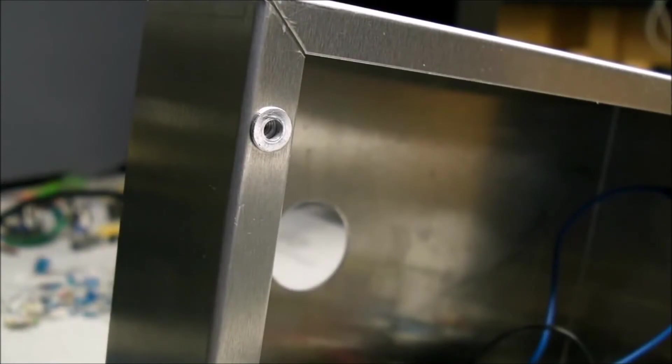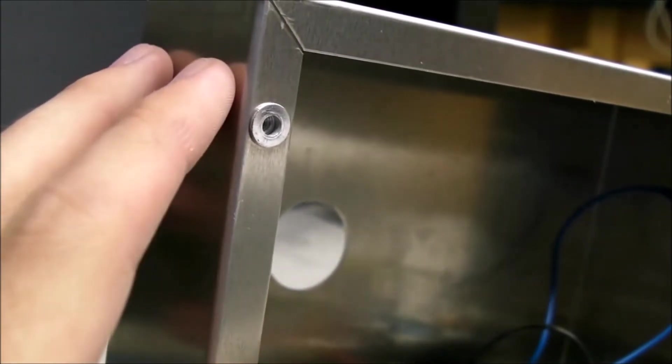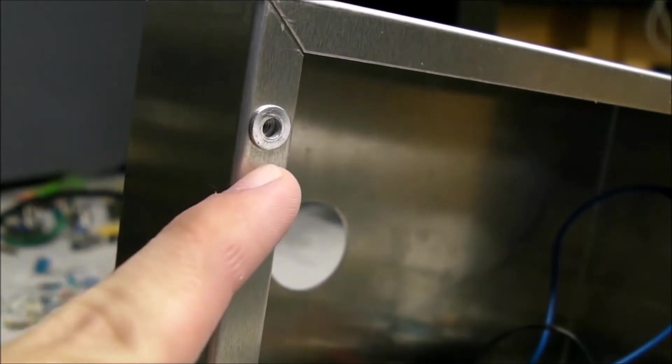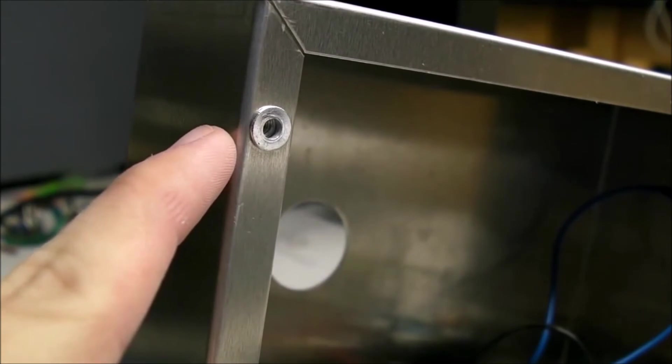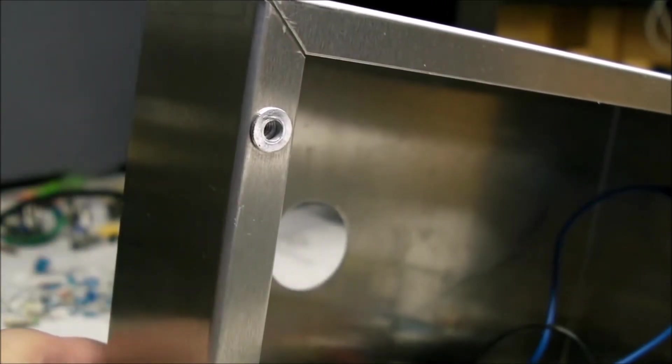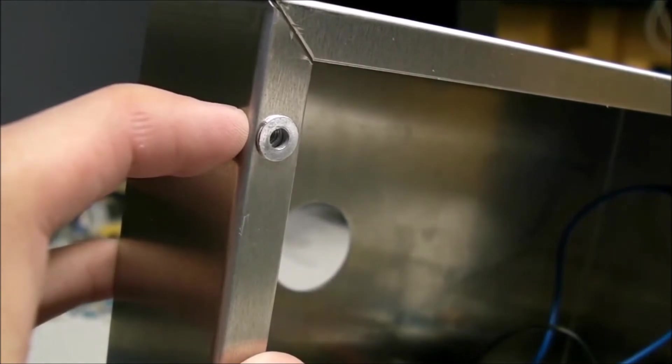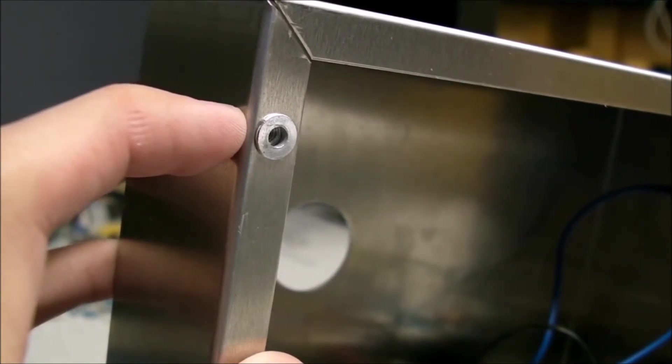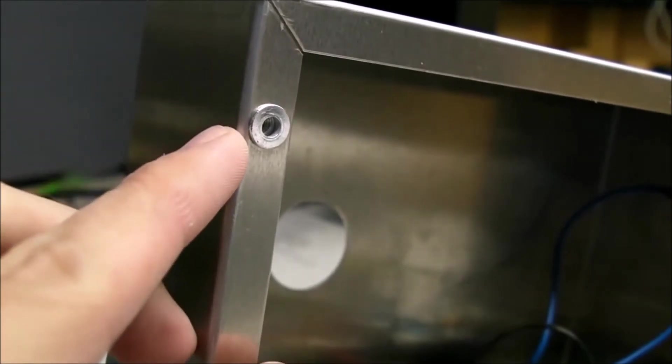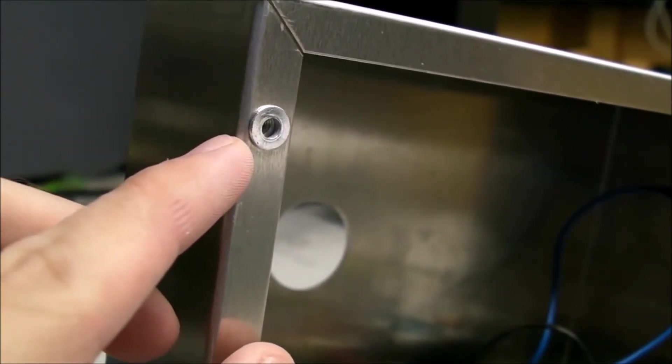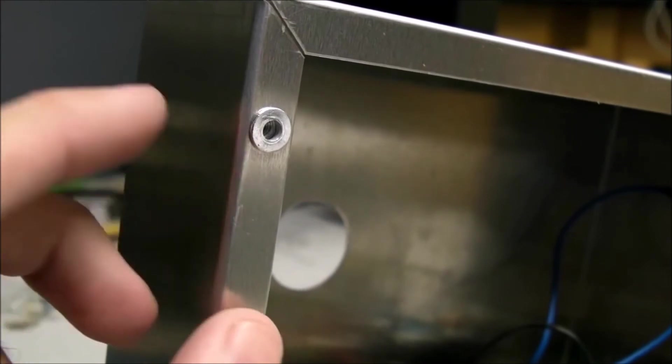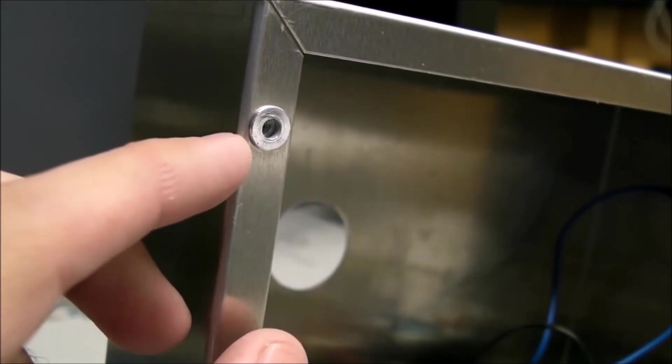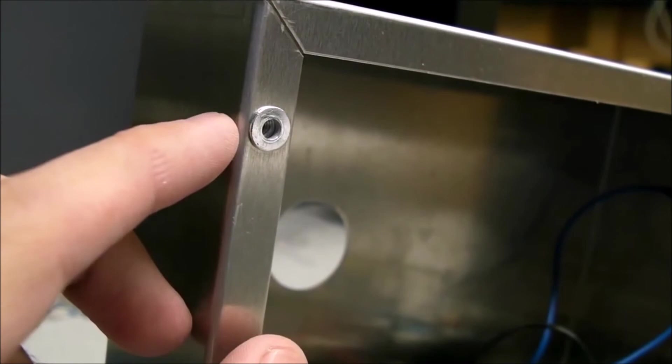One modification I did make to the original Hammond chassis box was to add these threaded inserts in place of just the plain holes that were drilled here to secure the bottom plate. This again was something I did on the suggestion of a co-worker, just because I knew that I'd be taking these screws in and out a lot. It turns out this actually makes it better than just the hole that was drilled in the original sheet metal. It gives you something threaded to go into, doesn't wear the hole out, and you can use a nice machine screw. So these are just 6-32 threaded inserts.